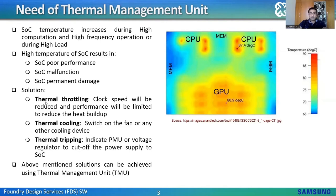Let us look at each solution. Thermal throttling means reducing the clock speed of that block, so the block operates at limited performance and heat doesn't build up. Thermal cooling means any device which cools the block, for example a fan, is called a cooling device. Thermal tripping means when the temperature of the SoC crosses its limit, it can cause permanent damage. To avoid this, we can switch off the power supply to the SoC by informing the PMU or by controlling the voltage regulator. These three solutions — thermal throttling, thermal cooling, and thermal tripping — can be provided by the thermal management unit.